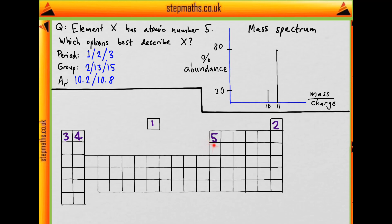What group and period is this? It's the second row down, so it must be period 2.